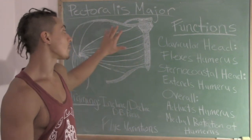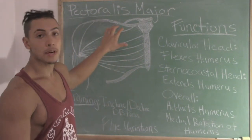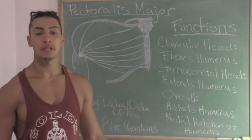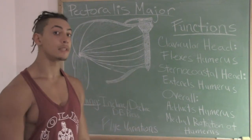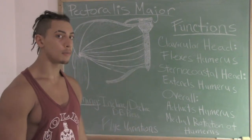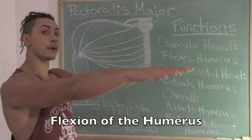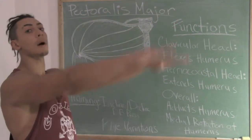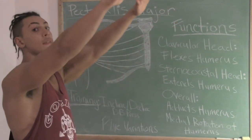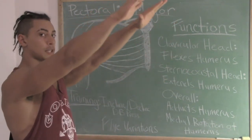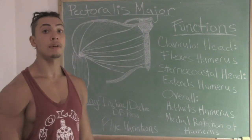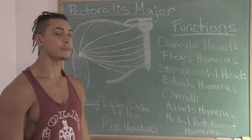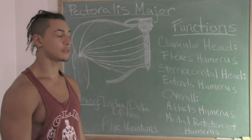Looking at the two heads separately, starting with the clavicular head: it has a specialized function, which is flexion of the humerus. If you put your arms out in front of you and then flex them upwards, this is humeral flexion. This is a function of the clavicular head of the pectoralis major — essentially the function of the upper chest.